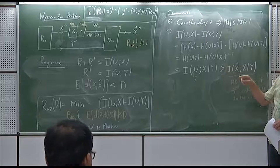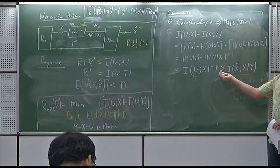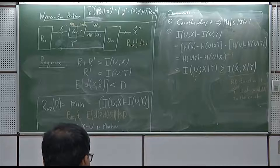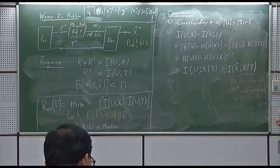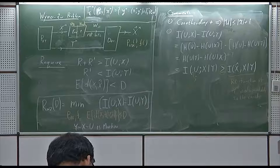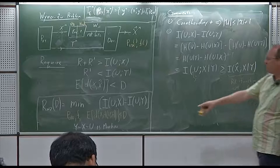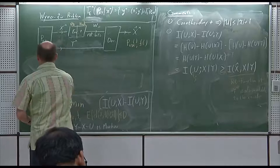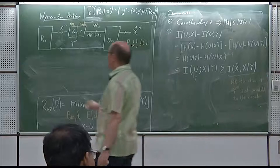That's a sanity check: we can always compress more if we had y available at the encoder. So we get a strict inequality for most problems, which makes sense. Now let's do an example. Let's look at the Gaussian example.